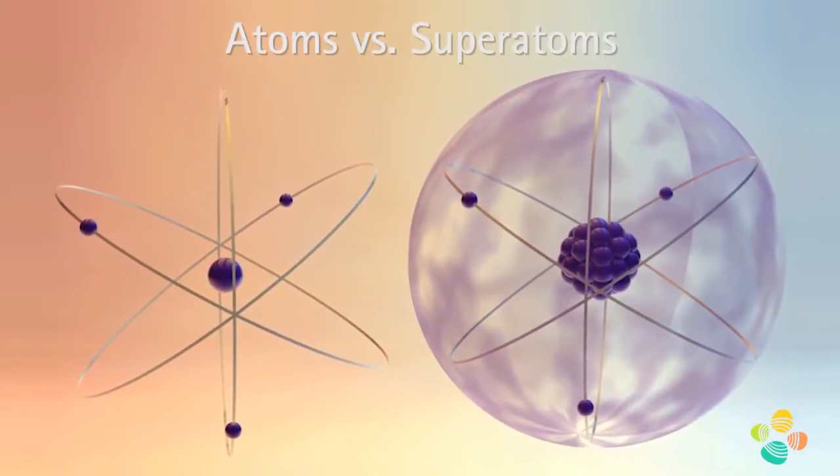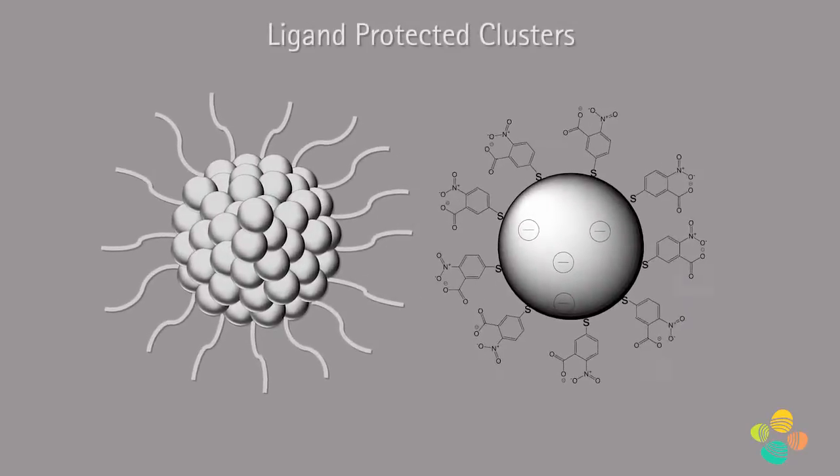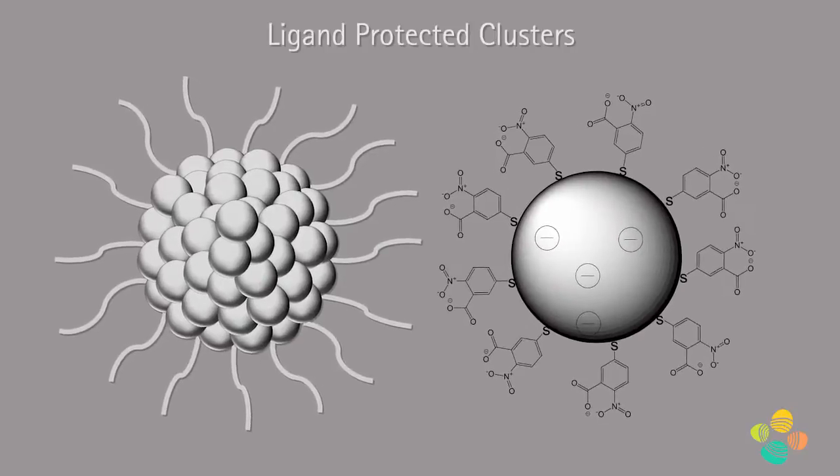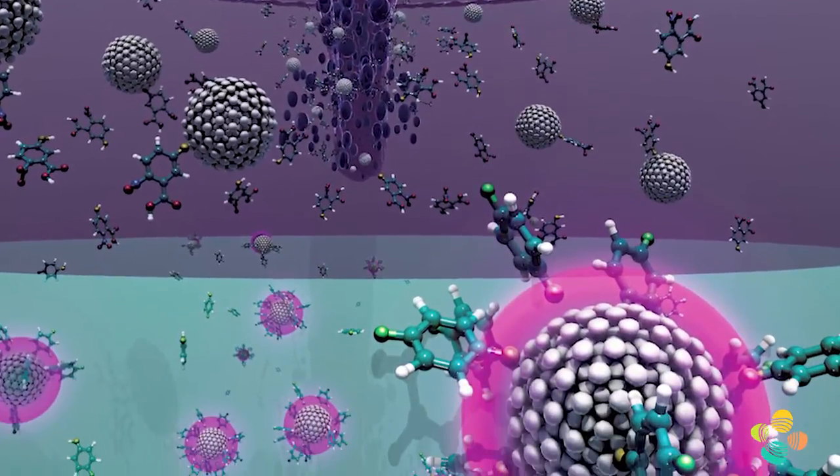Eventually, about 10 years later, chemists started making these clusters not just in the gas phase and solution phase using ligands. Ligand protected clusters behaved slightly differently than normal clusters. Most of the work back in the 90s was done on gold. Only in the late 2000s did people start working on silver.